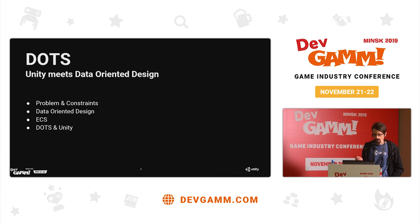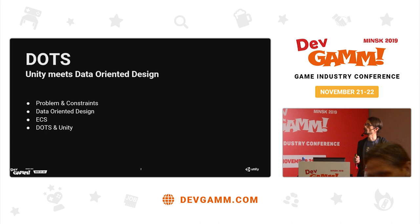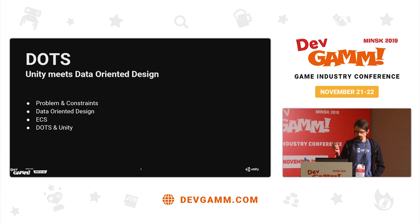So the outline of my talk is as follows. I will start by just defining what we're doing and why we're doing it — the kind of problems that we're dealing with and the kind of constraints that we have to work with. Then I'll move on to the principles of data-oriented design, which is the global approach that we're taking to solve these problems.